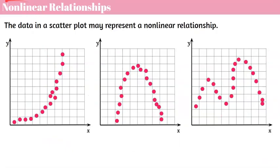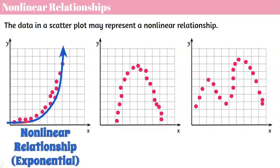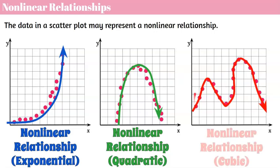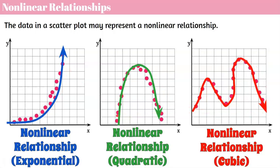There is also what we call non-linear relationships. The data in a scatterplot may represent a non-linear relationship, meaning it's not a line — you'll probably see some type of curve. The first graph is an example of an exponential function. If you haven't learned about those yet, you will in algebra 1, where you'll learn how to write the equation of an exponential function. The second graph also has a curve — a non-linear relationship — and in algebra 1 you'll learn that's called a quadratic function. The third graph, which you won't learn until algebra 2, has two curves forming a cubic function. All you need to know from this is that these are forming non-linear relationships — there's still a relationship, but they're non-linear.